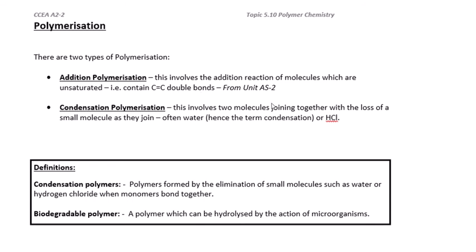Addition polymerization involves molecules which have a carbon-carbon double bond — we covered that at A2, so we'll do a brief revision. Condensation polymerization involves molecules joined together with a loss of water — that's where the term 'condensation' comes from — but in some cases hydrogen chloride can also be lost. Formally, condensation polymers are polymers formed by elimination of small molecules such as water or hydrogen chloride when monomers bond together.